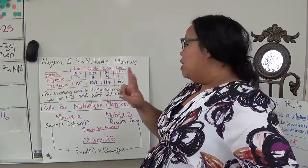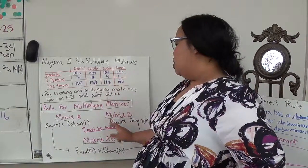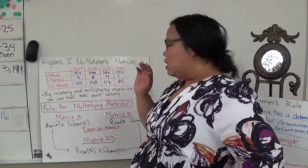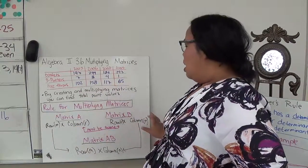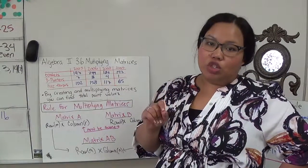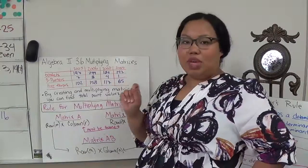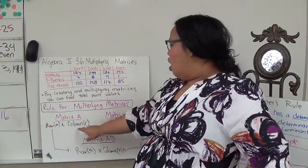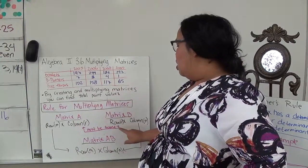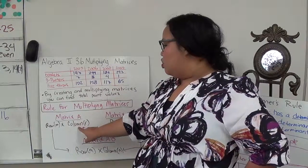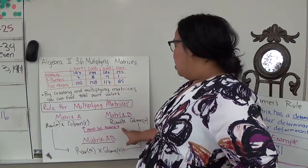Basically, when I have two matrices, the rule for multiplying them is that each matrix has a dimension — a row by column. I can only multiply the matrices when the number of columns in matrix A matches the number of rows in matrix B.